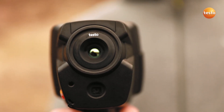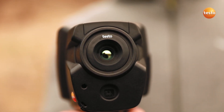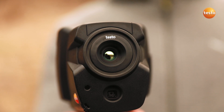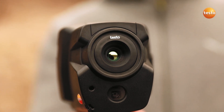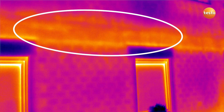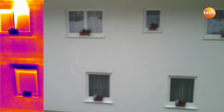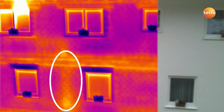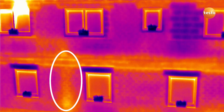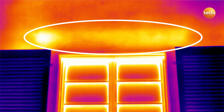Let's see which faults we can identify with the Testo 872 on the facade of this building: a cold bridge along the whole of the intermediate floor, the badly insulated riser of a radiator, and an unmistakable air leak at a window lintel.